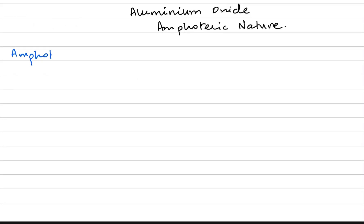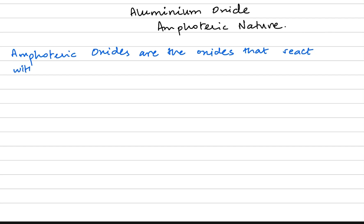What are amphoteric oxides? Amphoteric oxides are the oxides which have both acidic and basic properties. These oxides are the ones that react with both acids and bases. When they react with acids they behave like a base, and when they react with bases they behave like an acid.